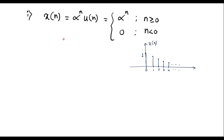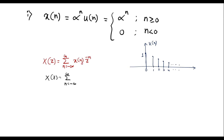The Z-transform of any signal X of n is given by: X of Z is equal to summation n equal to minus infinity to infinity of X of n times Z power minus n. Here X of n is given as alpha power n times U of n, so we have alpha power n, U of n, times Z power minus n. Here we can see that alpha power n is defined only for n greater than or equal to 0, and its value is 0 for n less than 0.